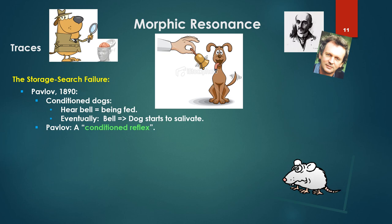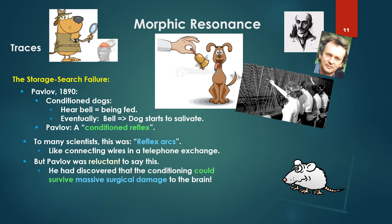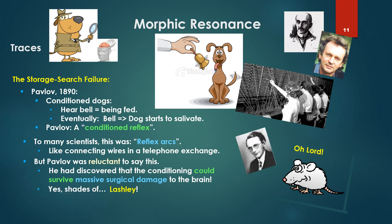Pavlov, in 1890, conditioned dogs. As everyone knows, a dog hears a bell — that means being fed. Eventually, when he hears the bell, the dog starts to salivate. This was termed a conditioned reflex. To many scientists, this was termed reflex arcs, like connecting wires in a telephone exchange. But Pavlov was reluctant to say this. He had discovered that the conditioning could survive massive surgical damage to the brain — shades of Lashley.